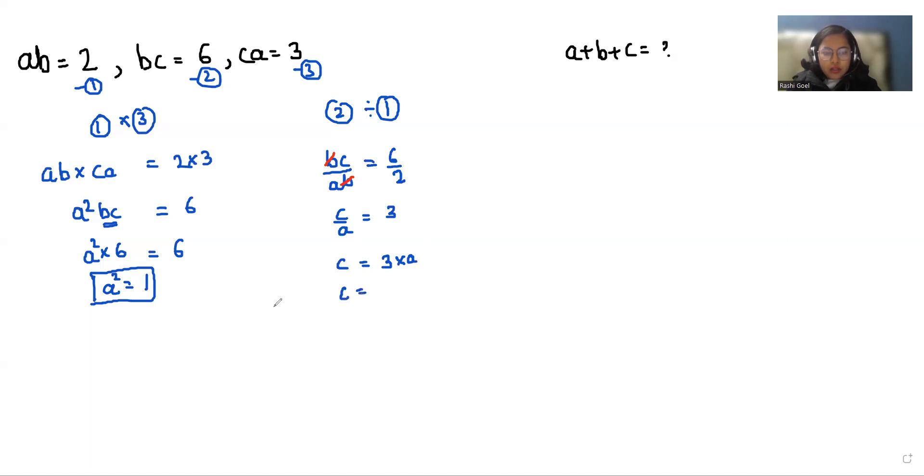And the value of A is 1. So 3 times 1. If I find the value of A squared, C squared, so 3 squared is 9. The value of A is plus 1 and minus 1 both. So value of C can be plus 9 or minus 9 as well.